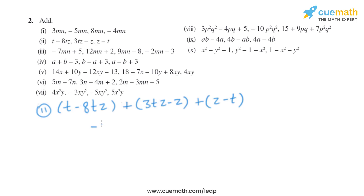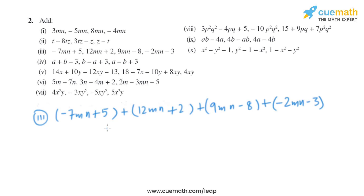Minus z plus z is also 0. So the result is minus 5tz. Now let's move on to the third part. The expressions given are minus 7mn plus 5, 12mn plus 2, 9mn minus 8, and minus 2mn minus 3.